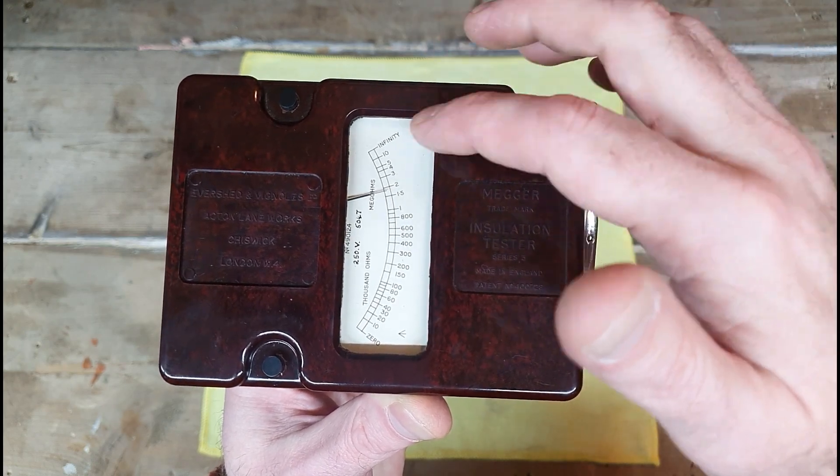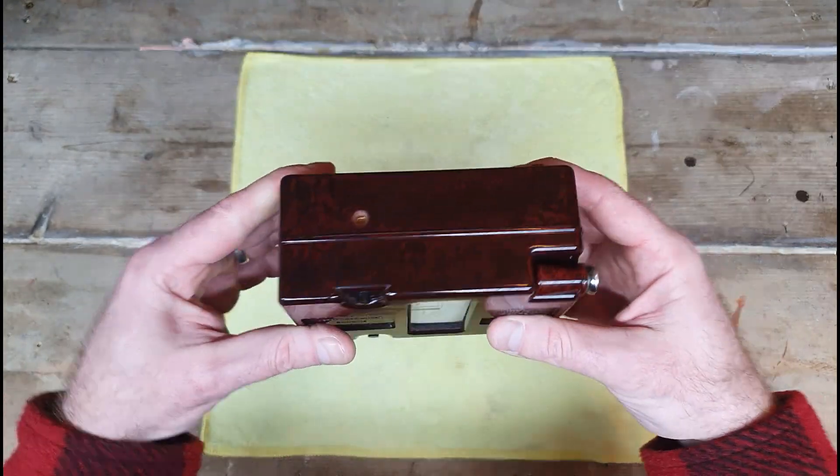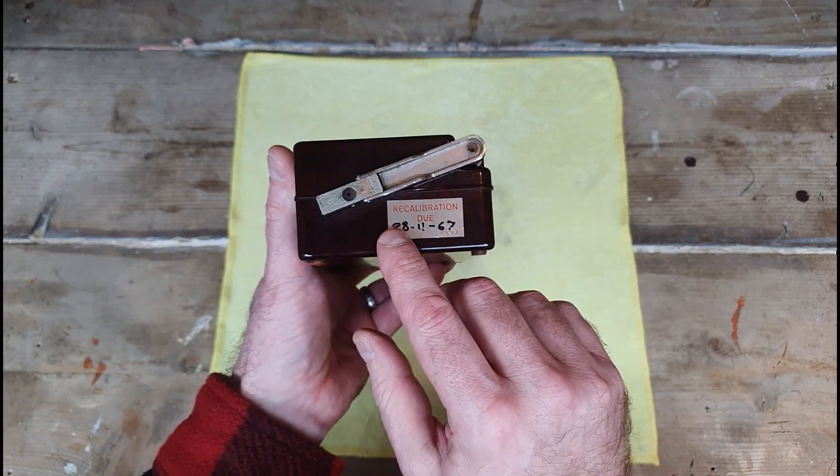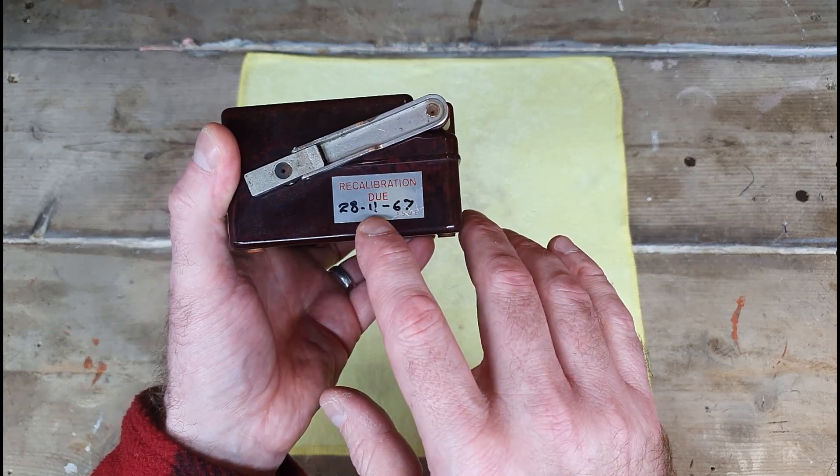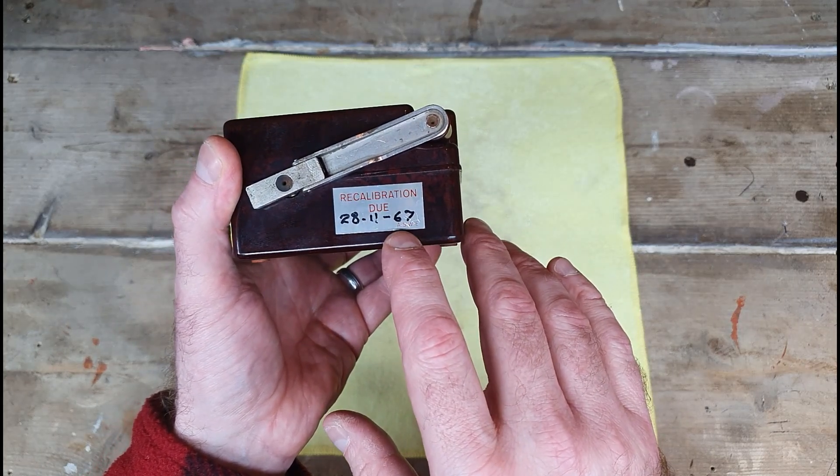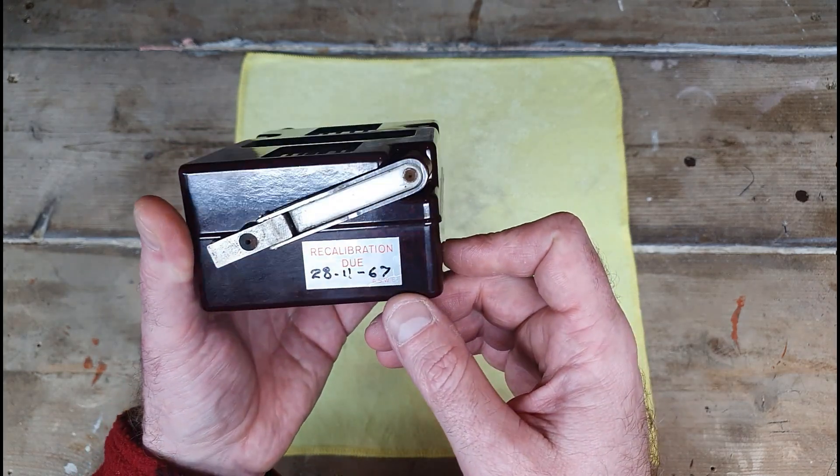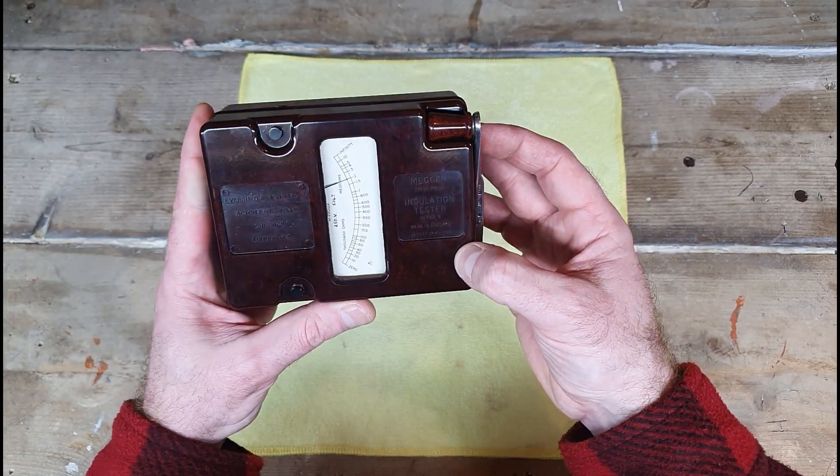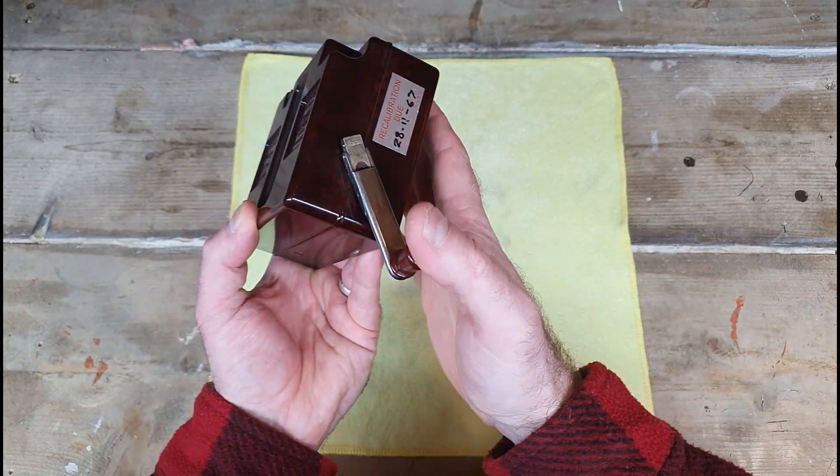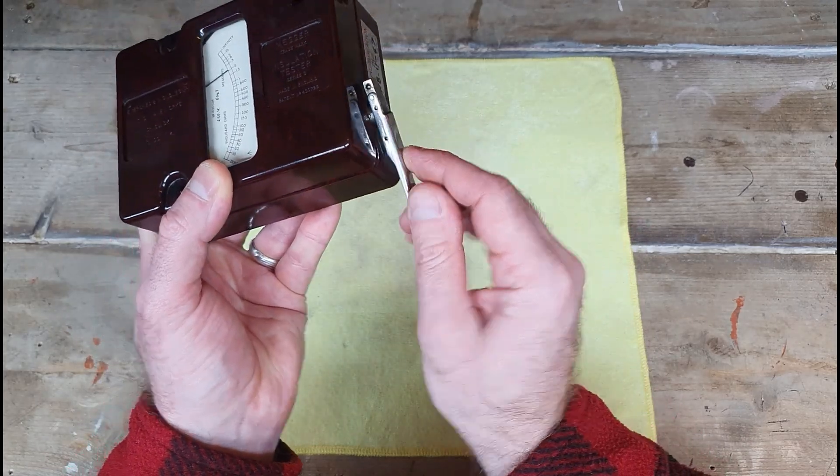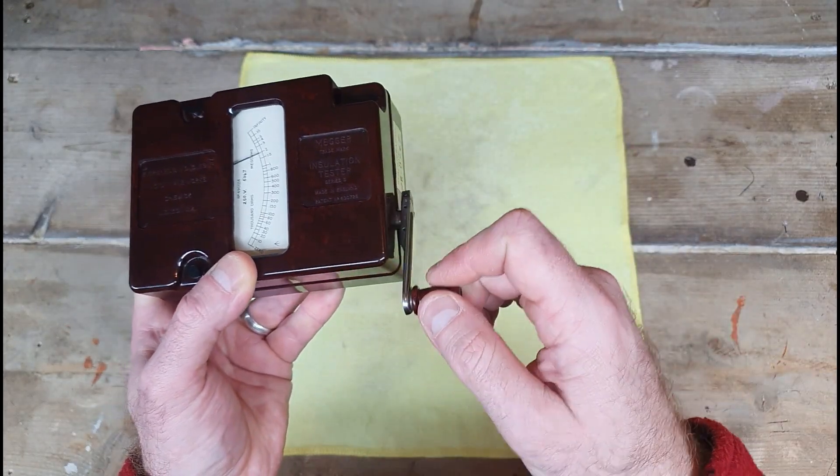I know what you're thinking, where do the batteries go? Well the batteries don't go anywhere. Look at the calibration certificate or the calibration label they've put on the side: 28th of November 1976 was the last time it was due a calibration. So yeah, quite old. I have no idea how they would have calibrated something like this. There's no place for the batteries and that's because it has this little crank handle there. That's a nice action there, that feels really nice and mechanical.